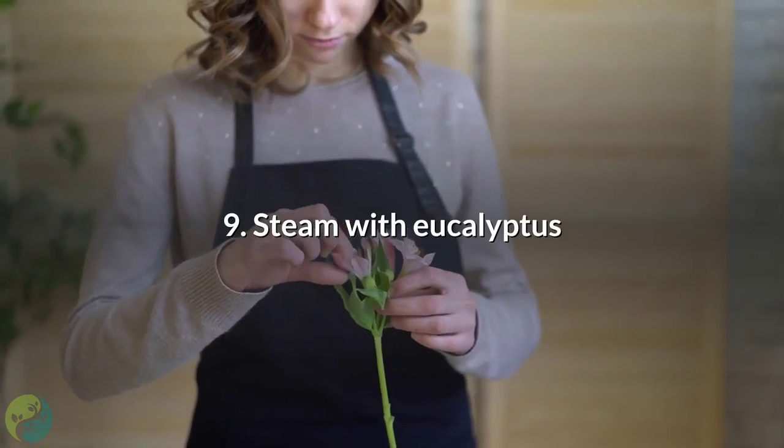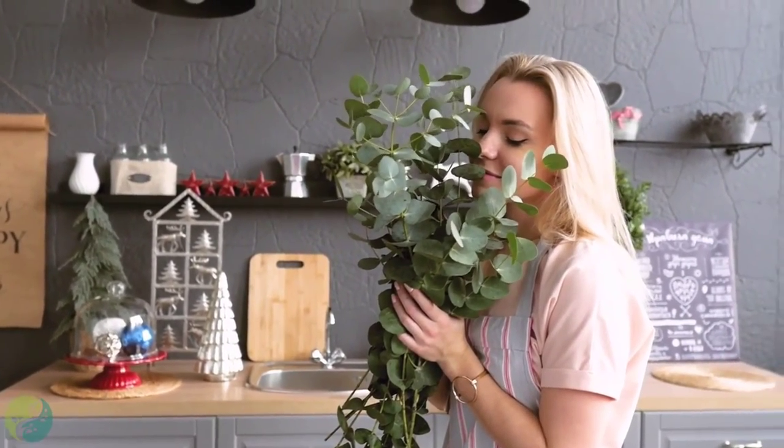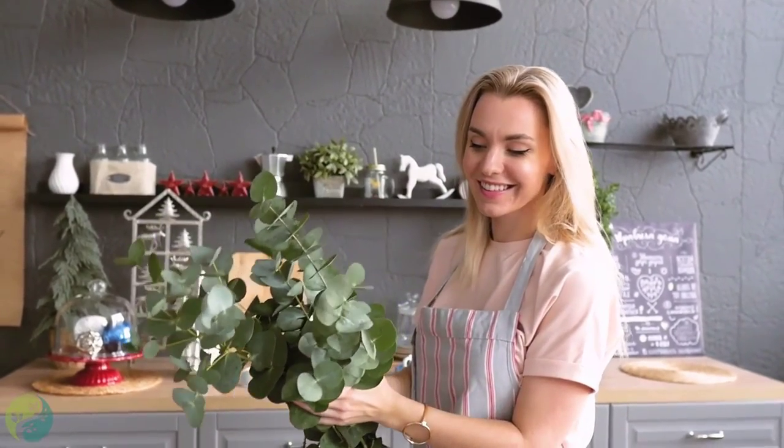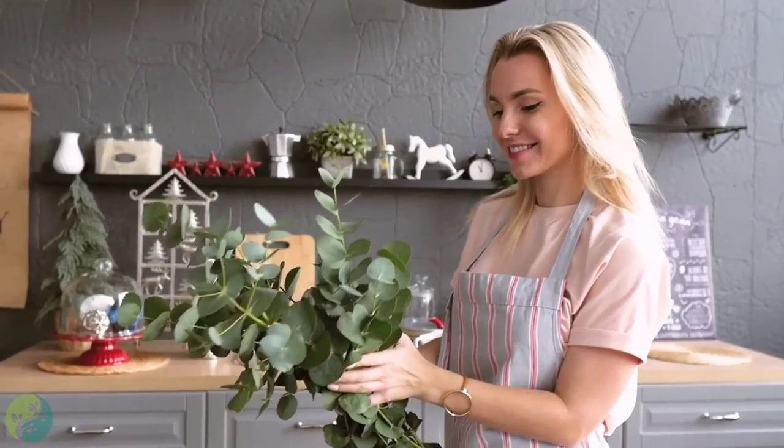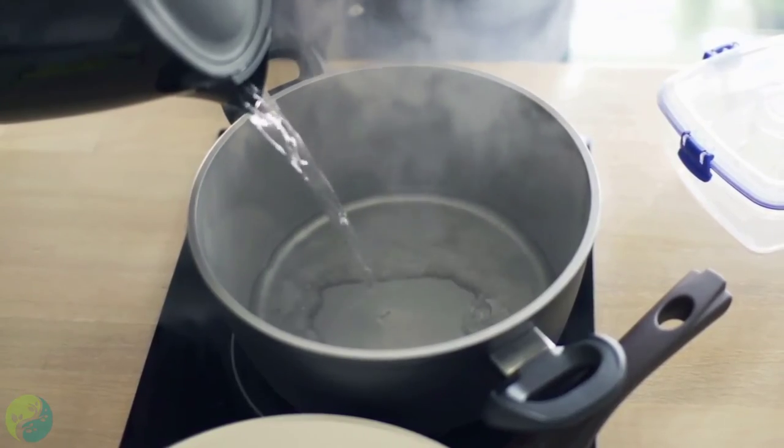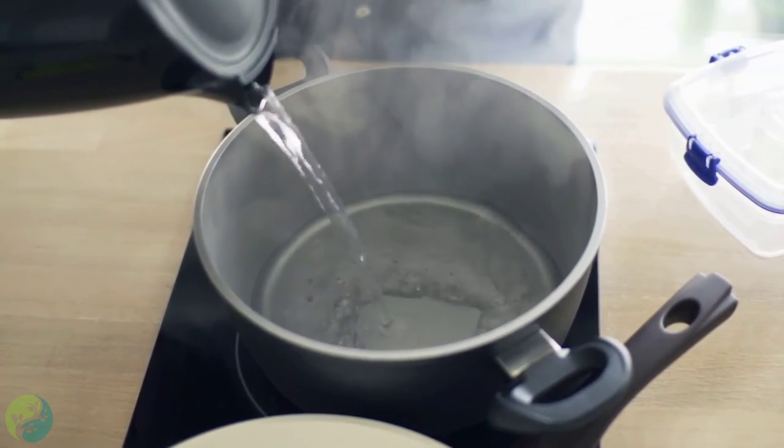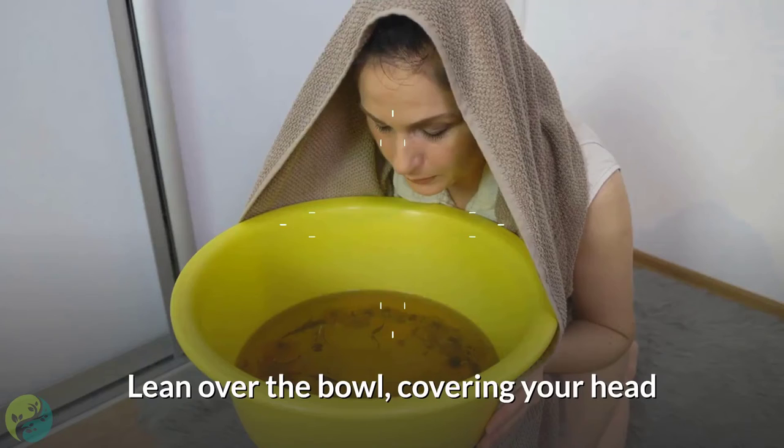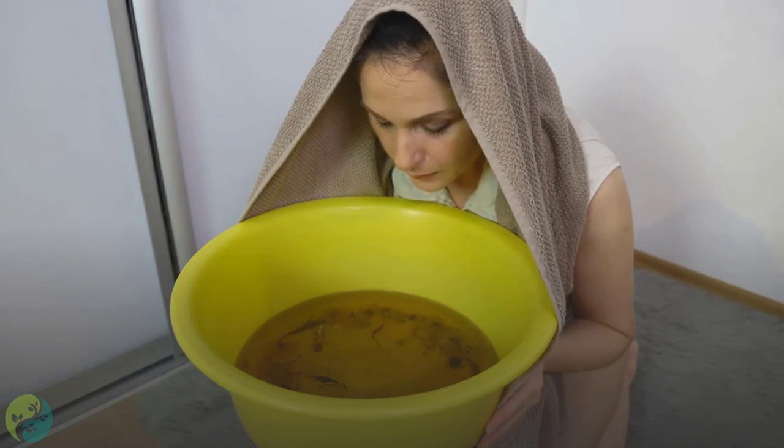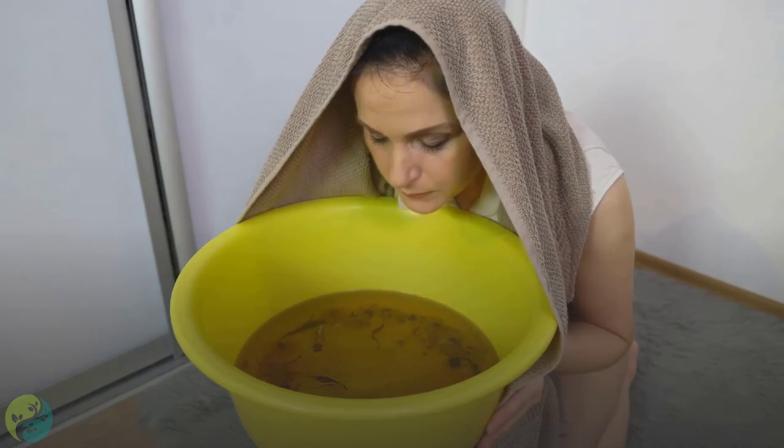9. Steam with Eucalyptus. Eucalyptus essential oil is scientifically proven as a home remedy to kill several of the strains of bacteria that cause respiratory problems responsible for congestion like sinus infections. To help a stuffy nose, stir five drops of pure eucalyptus essential oil into one quart of boiling water in a heat-proof bowl. Lean over the bowl, covering your head and the bowl with a thick towel, and inhale the steam for 10-15 minutes. Repeat three to four times a day while you're fighting the infection.